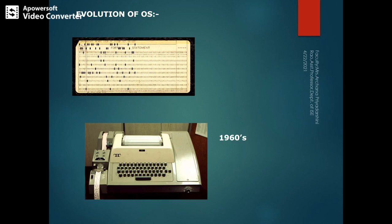In the first generation, machine language was used. In the second generation, assembly language and high-level languages like FORTRAN and COBOL were used. The second generation computers used both batch processing and multiprogramming operating systems, whereas the first generation made use of batch operating systems only. We will discuss what batch processing and multiprogramming operating systems are.